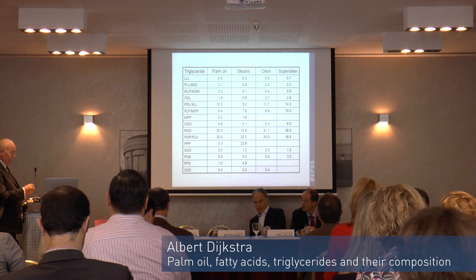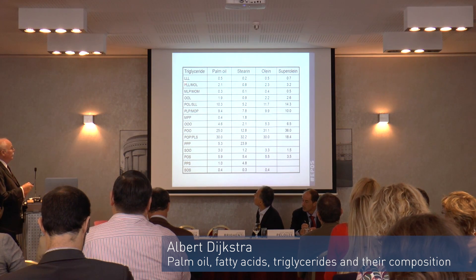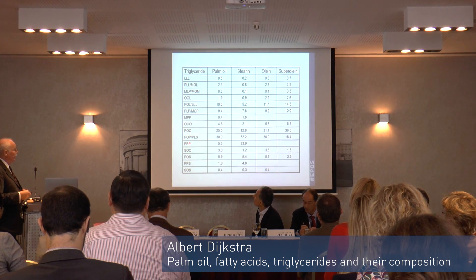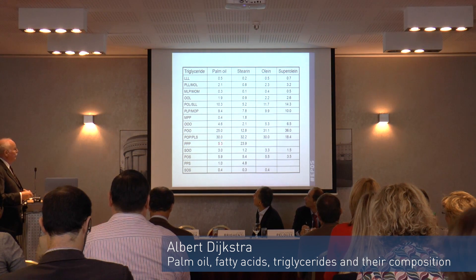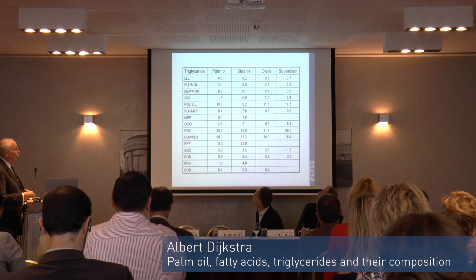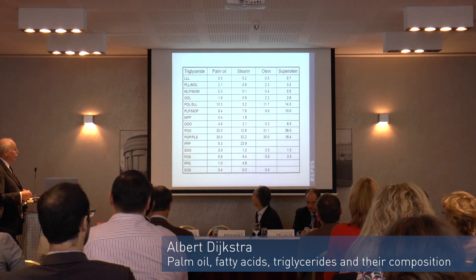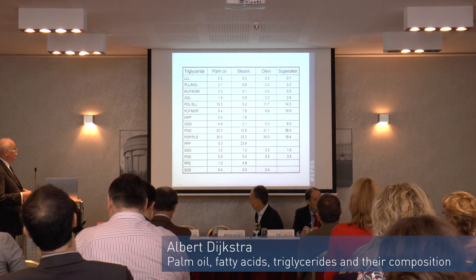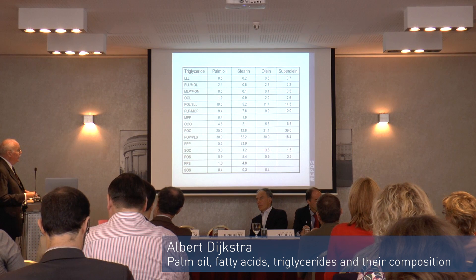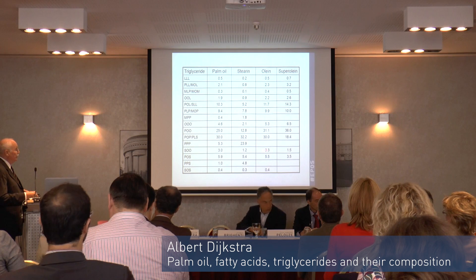In more detail, the PPP — tripalmitene — is 5.3% in palm oil, concentrated in the stearine, and absent in the oleines. A lower-melting triglyceride such as SOO is enriched in the lower-melting fractions but is too high-melting to appear in the super oleine, so it is concentrated in the mid-range fraction.